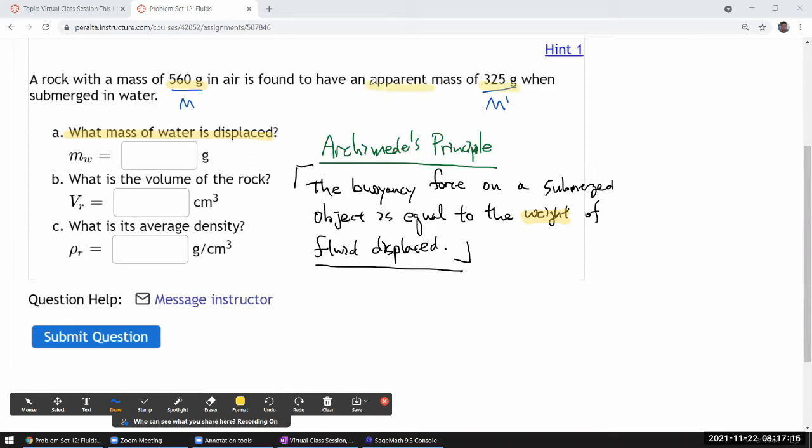So we can say that the weight of water displaced is the difference, or weight corresponding to the difference between these two. So when we work it back to what mass of water we are displacing, that would be just the difference between these two: 560 minus 325, that's 235 grams.